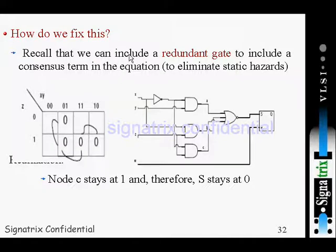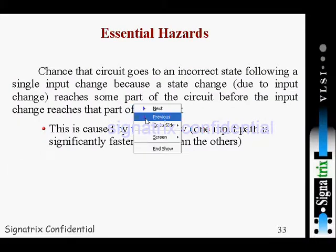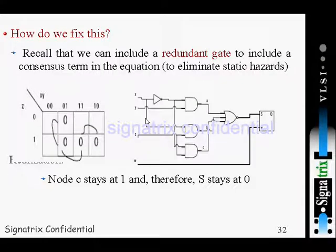Include a consensus term in the equation to eliminate the static hazard. We have eliminated the static hazard with the help of consensus theorem. Node C stays at 1 and therefore S stays at 0, so you will get the right output.